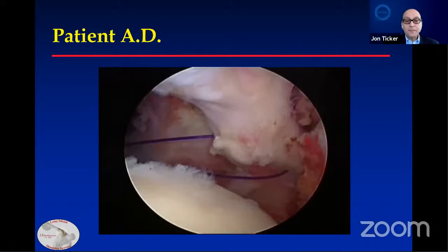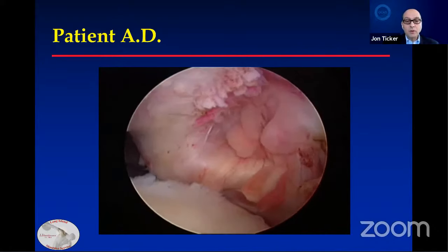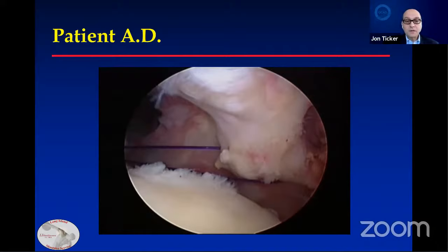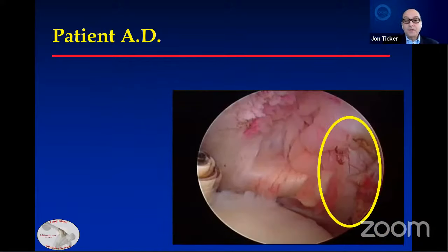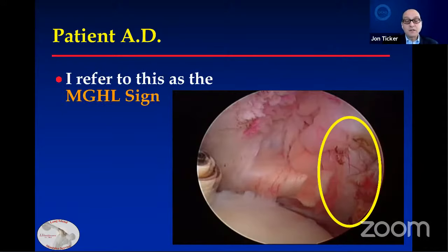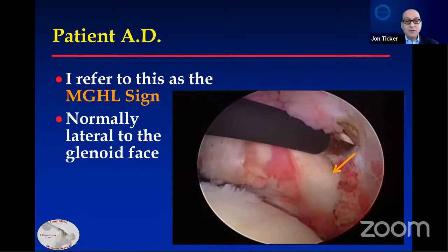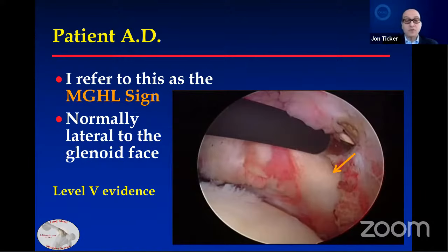I've placed a traction suture and I can pull a little more on the subscapularis. What that reveals is the middle glenohumeral ligament. In normal circumstances, this is lateral to the glenoid face, and I use that as a guide to what needs to be repaired. If I cannot see the middle glenohumeral ligament, I'm more than likely going to repair the subscapularis. This is level five evidence, but it helps me identify tissue that needs to be repaired. I am going to release this as part of the surgery, however.